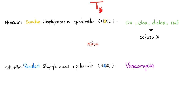How do we treat Staphylococcus epidermidis? Very similar to Staphylococcus aureus. If it's sensitive to methicillin, we give oxacillin, cloxacillin, dicloxacillin, and nafcillin — anti-staphylococcal penicillins — or cefazolin, a first-generation cephalosporin. We don't use methicillin itself because it's toxic to the kidney and causes interstitial nephritis. If it's resistant to methicillin, use vancomycin. If it's resistant to vancomycin, use linezolid.